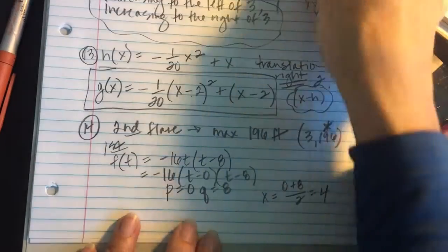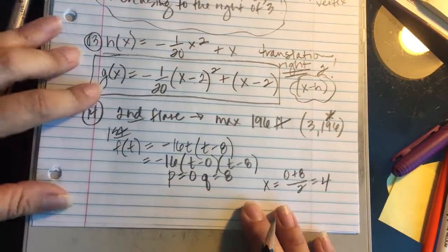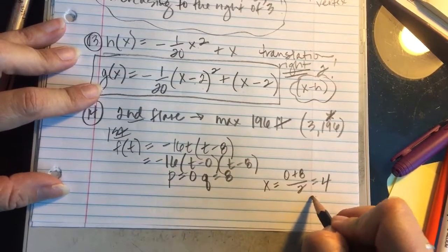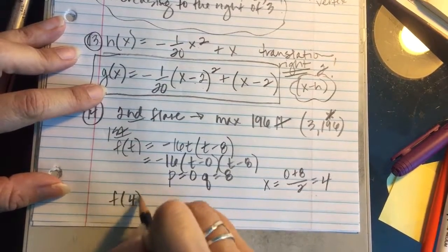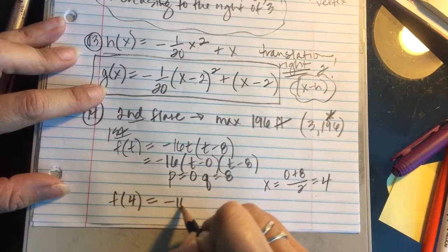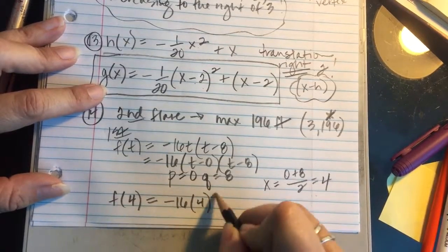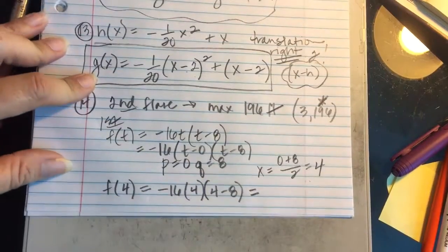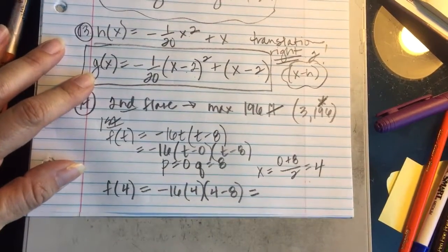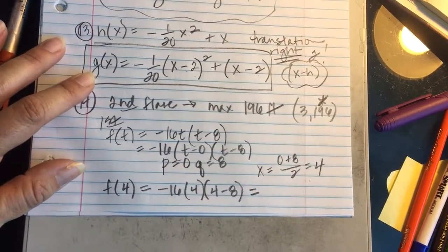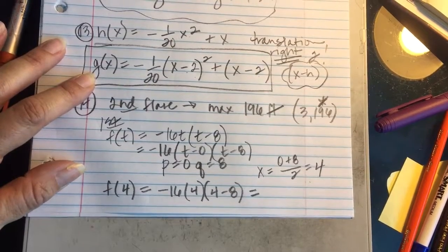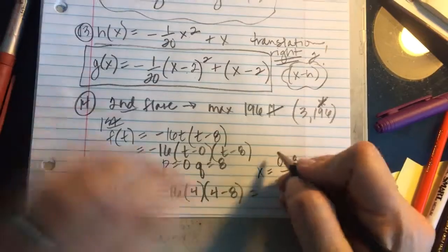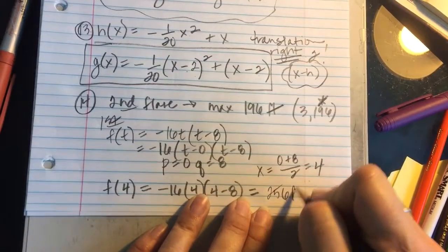That's going to leave me with 4 as the x value of the vertex. If I plug in 4 as the x value of the vertex, f(4) is going to be equal to -16 times 4 times the quantity (4 - 8). And that's going to give me the maximum height of this first flare. And I'm finding out that that's 256 feet.